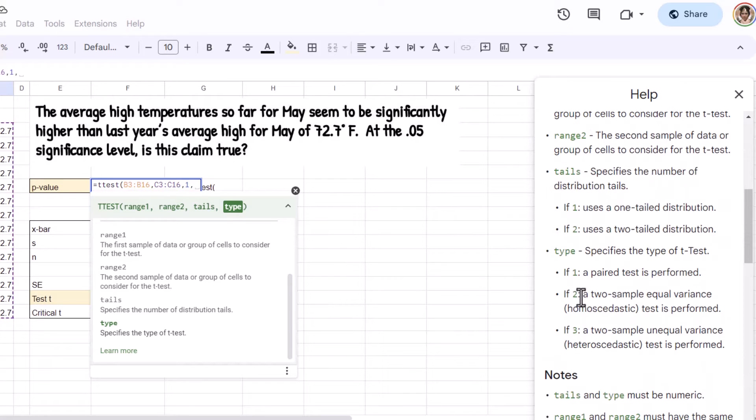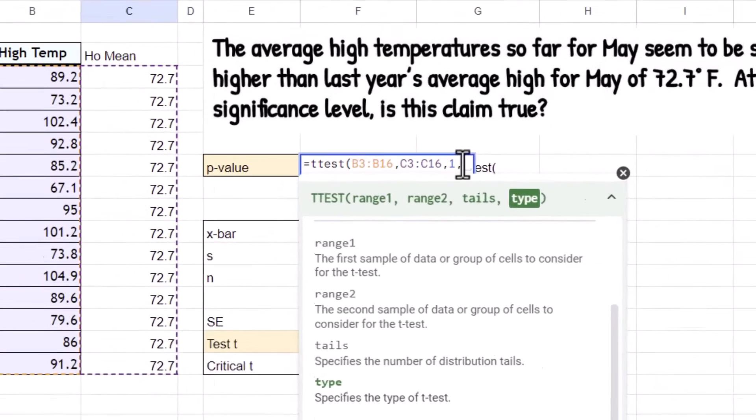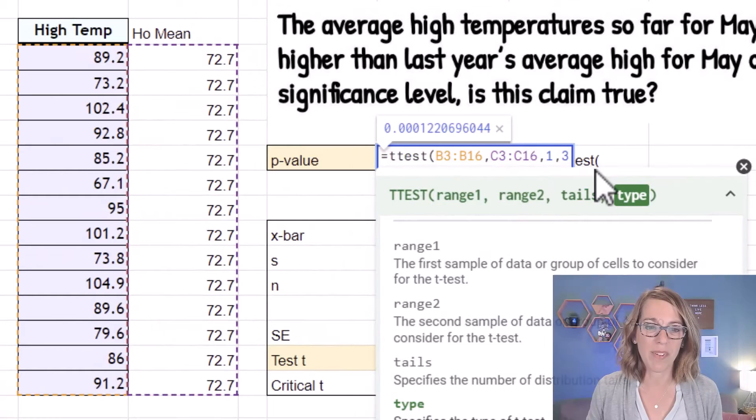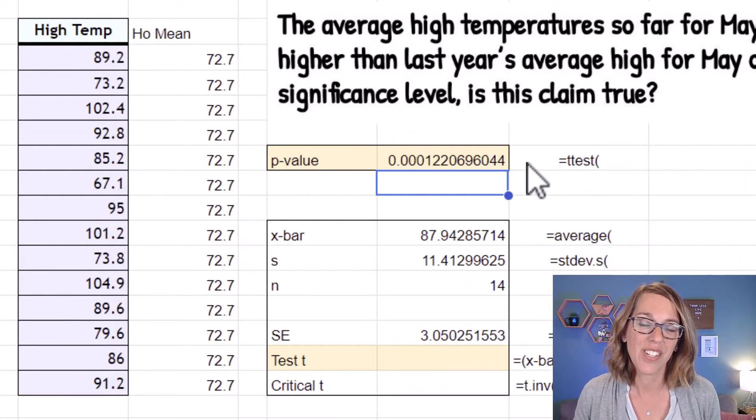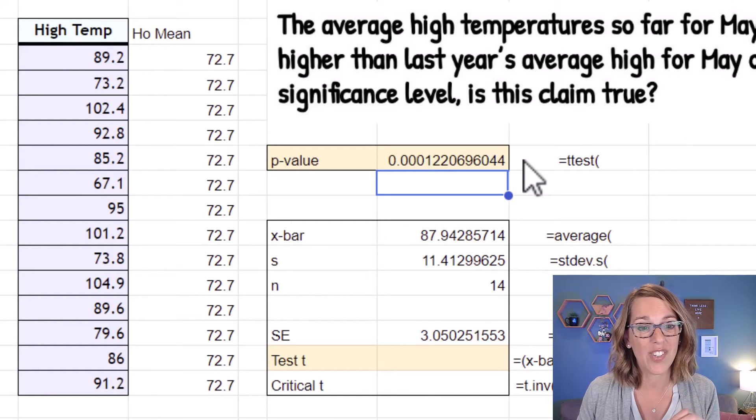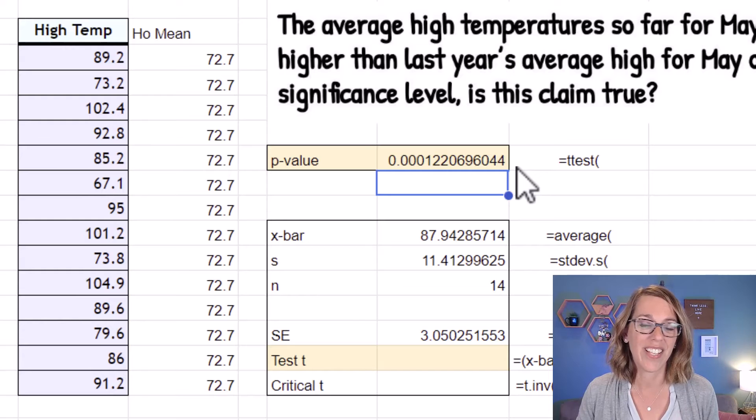So one is a paired test. Two is a two-sample equal variance. We definitely want three. This is a two-sample test, but I'm tricking it, so I want to go ahead and grab the unequal variance. So my type, if I click back into my function here, is going to be three, and then enter. So I get this really small p-value. I'm definitely showing a significantly greater average than that 72.7. So that's the first way.